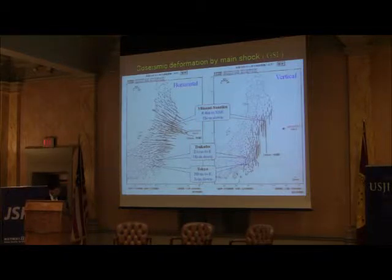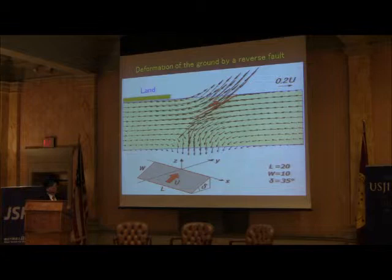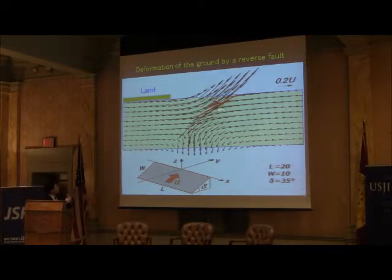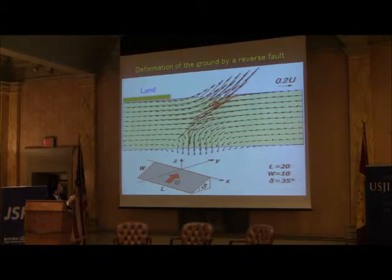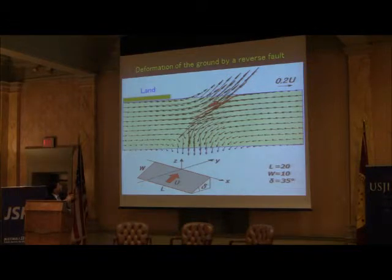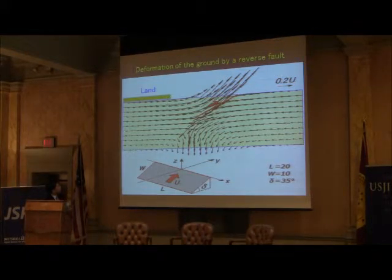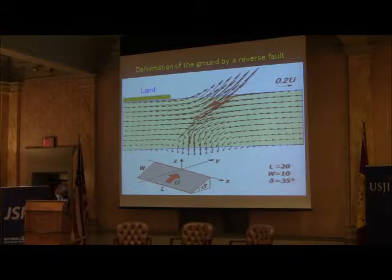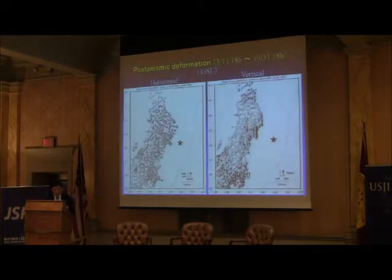Such a cluster of deformation is reasonable in the view of elasticity theory of dislocations. If a thrust movement occurs in an elastic body, if the slip is, for example, 20 meters, this scale corresponds to 40 cm of surface displacement. Just above the source, the ground or sea bottom goes up and generates a large tsunami. The area around it moves horizontally toward the source and shows subsidence. So it's not surprising — the amount of deformation was very large compared to the past.